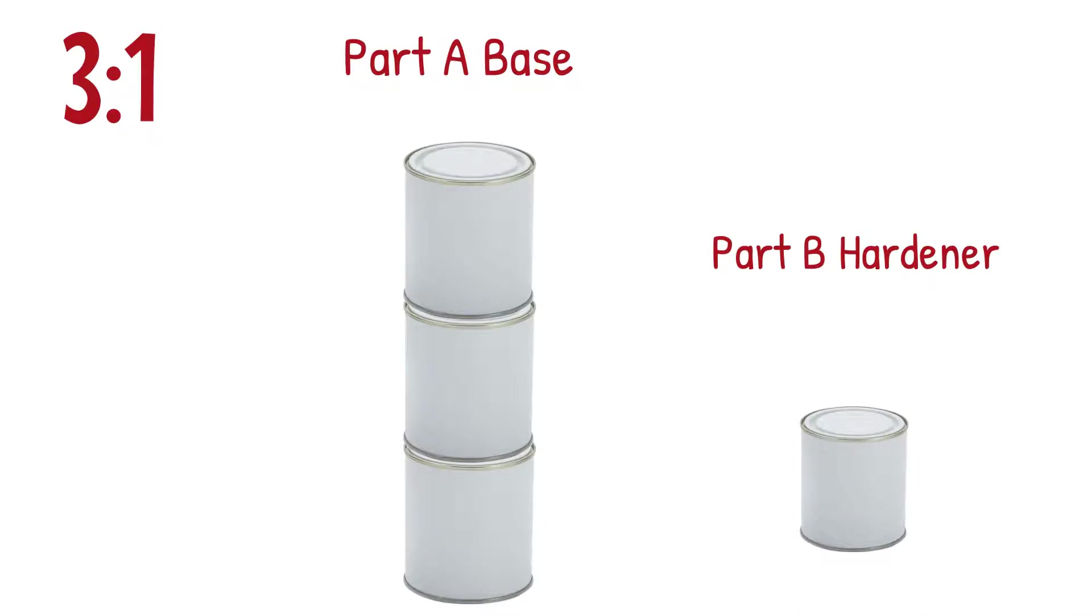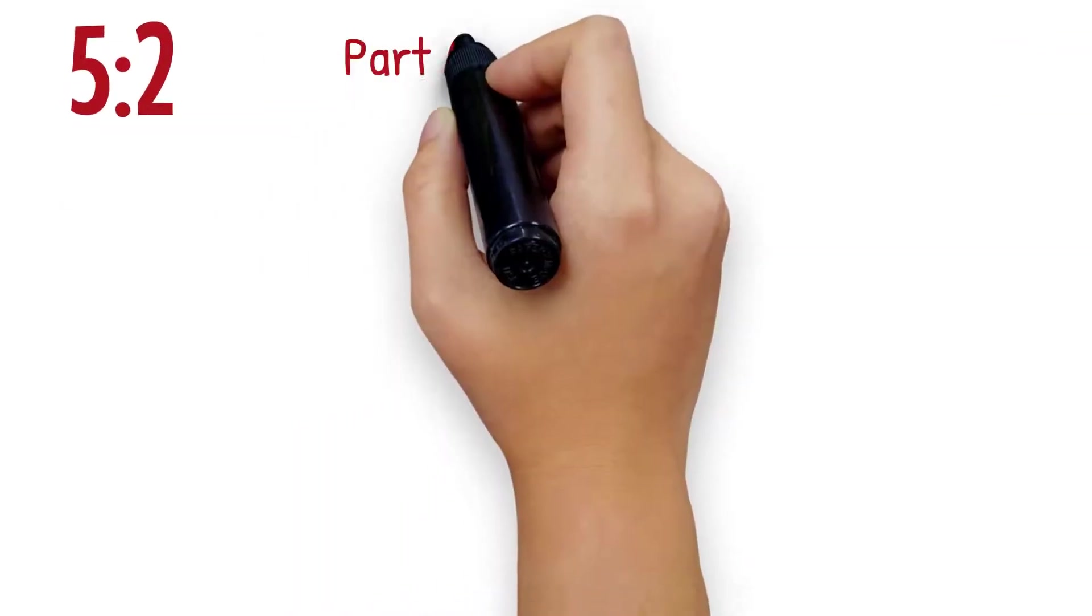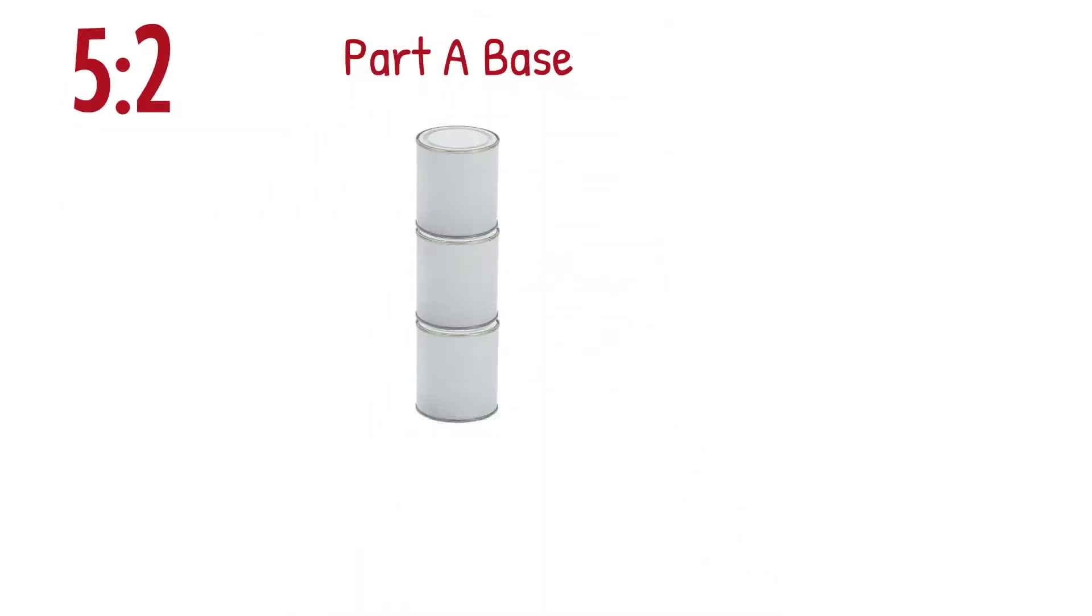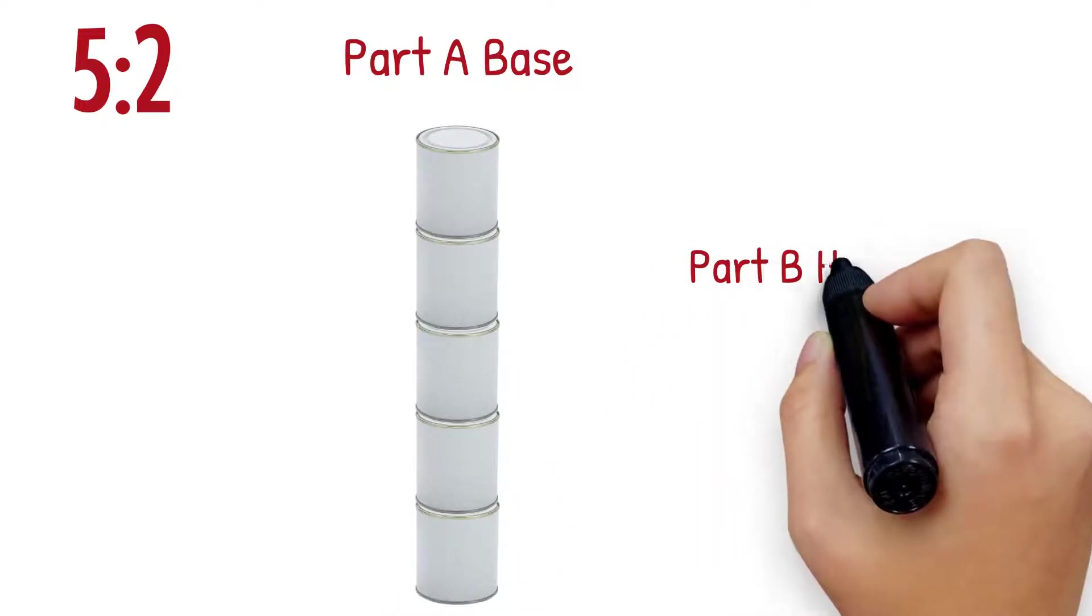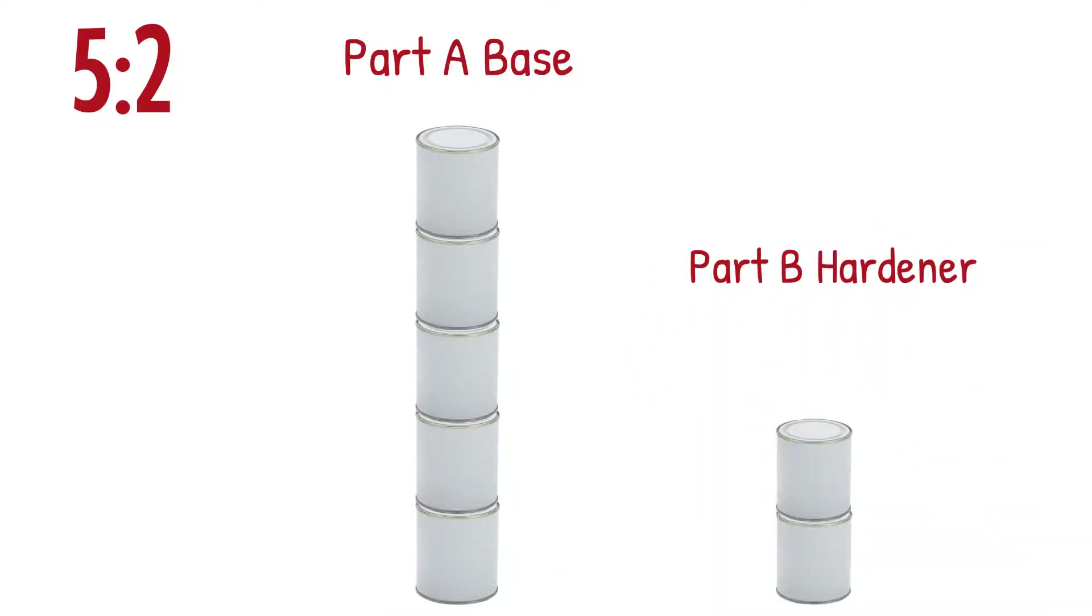The smaller number is usually the hardener or catalyst which causes the coating to cure. A mix ratio of 5 to 2 means you need five parts of Part A base to mix with two parts of Part B hardener.